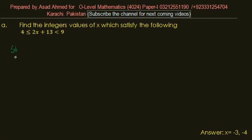value of x. So the solution is: 4 ≤ 2x + 13 < 9. We have to find the value of x. First, we try to remove the number 13 from here, so we...